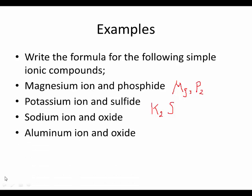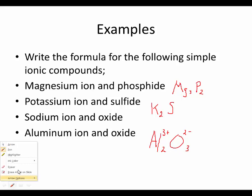The aluminum and the oxide ion are probably the toughest pair. Aluminum: Al three plus. Oxide: two minus. This is kind of like the magnesium and the phosphate — we're going to go with two and three, and just erase the charges. That's how we write formulas.